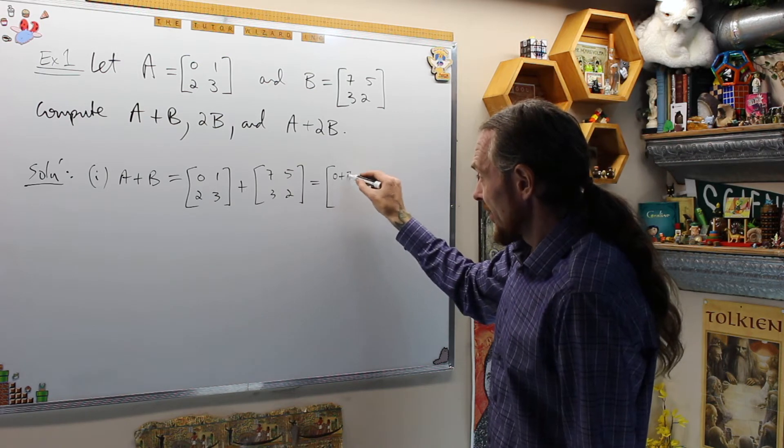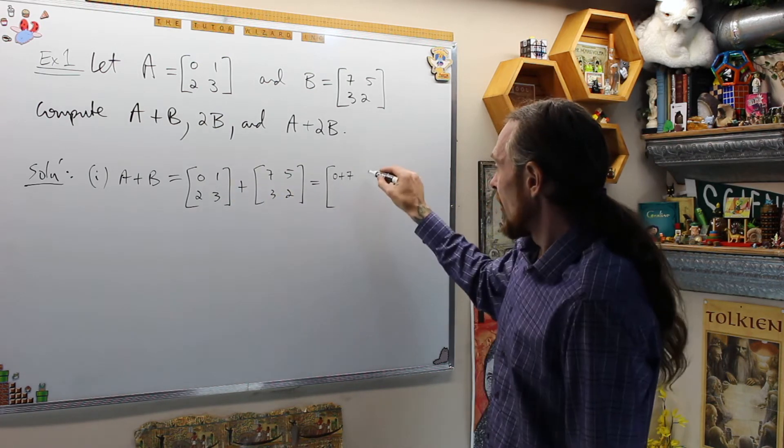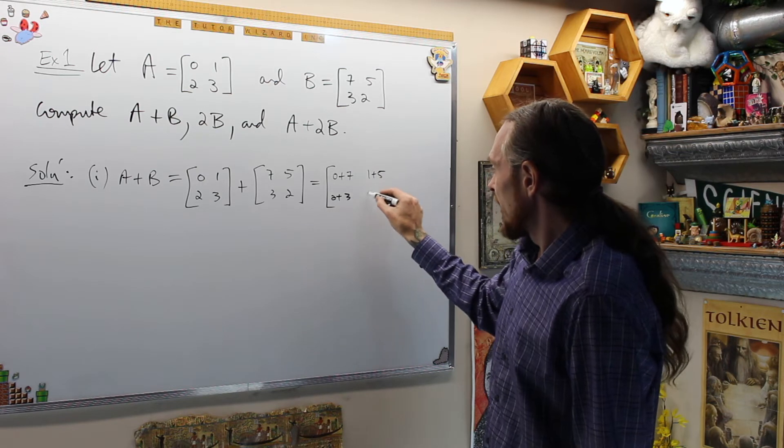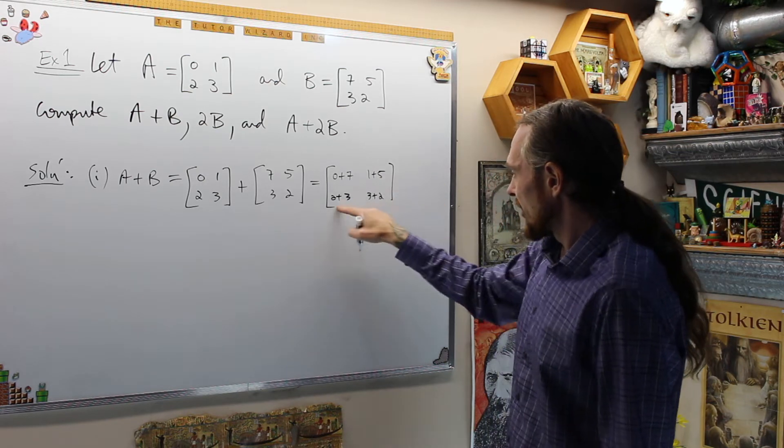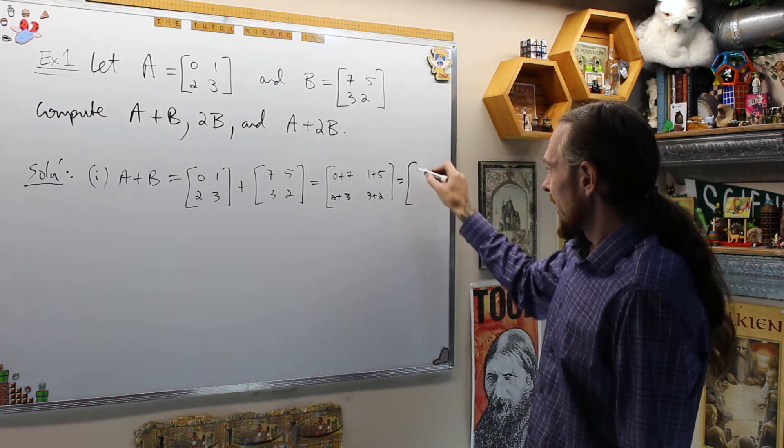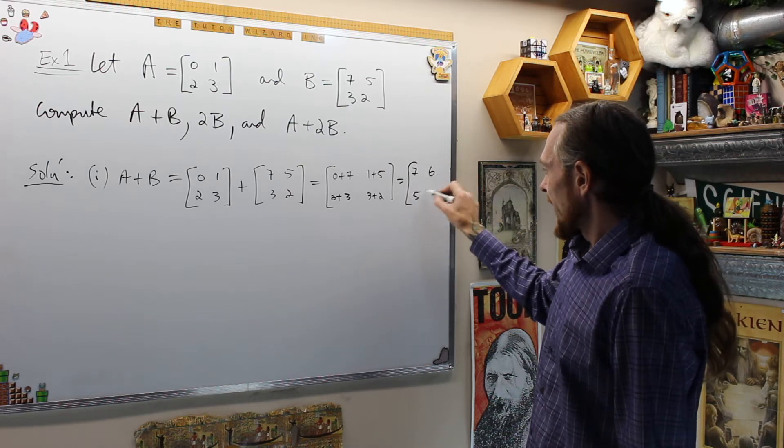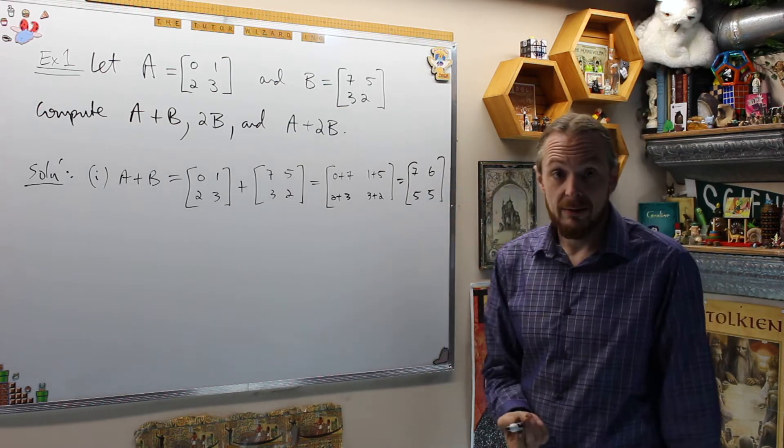This by definition says you add a_{1,1} to b_{1,1}, you add a_{1,2} to b_{1,2}, you add a_{2,1} to b_{2,1}, and you add a_{2,2} to b_{2,2}. That says technically this will be 0+7, 1+5, 2+3, 3+2, which is commutative. Therefore we get [7,6; 5,5] is the outcome. This is how we add.